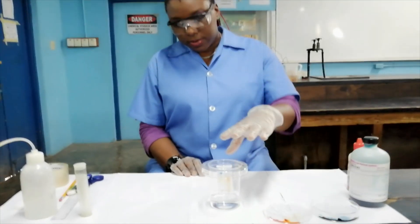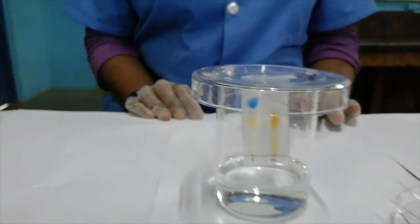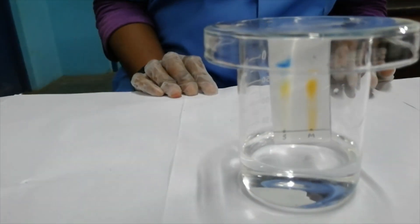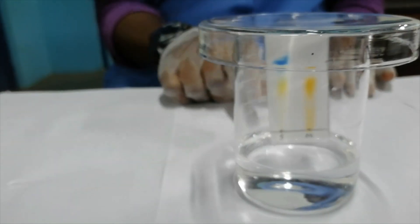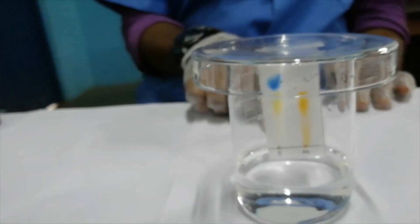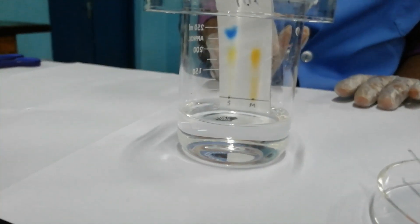This chromatogram has developed for quite a while now. You can see that we have the blue and the yellow separating for the green methyl orange and we have one long streak for the methyl orange.